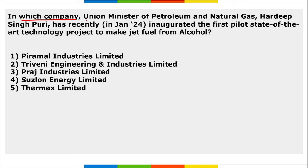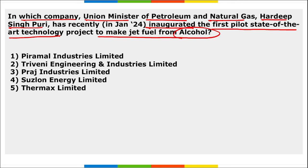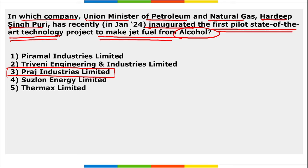Union Minister of Petroleum and Natural Gas Hardeep Singh Puri inaugurated the first pilot, state-of-the-art technology project to make jet fuel from alcohol at Praj Industries Limited. This project will produce Sustainable Aviation Fuel (SAF) — biological aviation fuel.